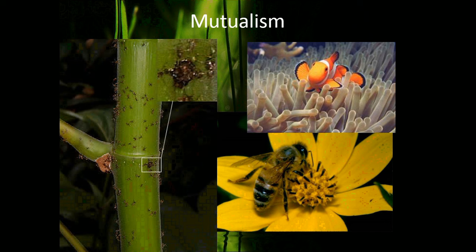Here are some examples of each type. Mutualism can be seen between ants and the acacia tree, as discussed in previous lectures. Bees and flowers have a mutualistic relationship because the bees provide pollination for the flowers and the flowers provide food for the bees. The clownfish and the anemone it lives in have a mutualistic relationship because the clownfish is provided with a safe place to live, and the anemone gets any food that the clownfish drops down, increasing the amount of food it gets.